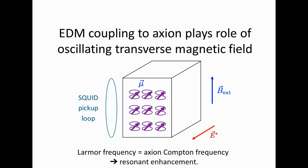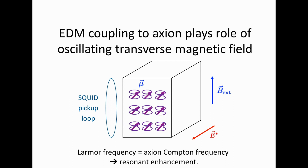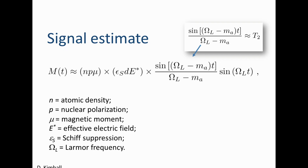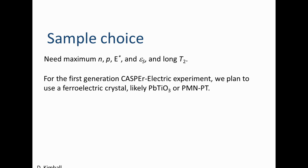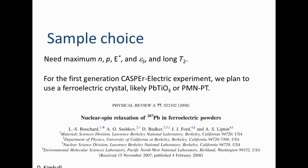The idea is to cause the spins to precess and then measure the magnetization using a SQUID pickup loop, which is a sensitive way of measuring small magnetic fields. The signal in these experiments is related to the atomic density, nuclear polarization, magnetic moment, and this effective electric field — you want a material with a strong field. These can be approximated in terms of T2, the transverse coherence decay time. You want to maximize T2 and all other parameters including the electric field. For their first experiment, they chose one of two ferroelectric materials satisfying those conditions.